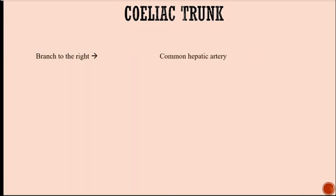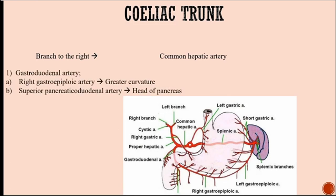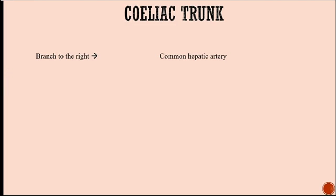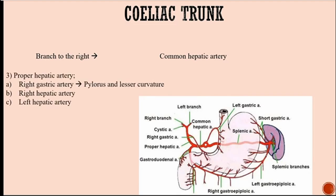Moving to the branch that goes to the right, you have the common hepatic artery. It has two branches. One is the gastroduodenal artery that gives rise to the right gastroepiploic artery which supplies the greater curvature of the stomach, and then the superior pancreaticoduodenal artery supplying the head of the pancreas.